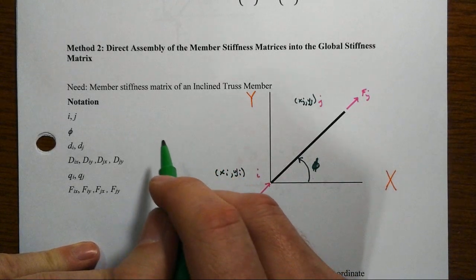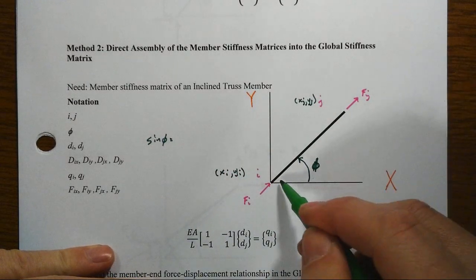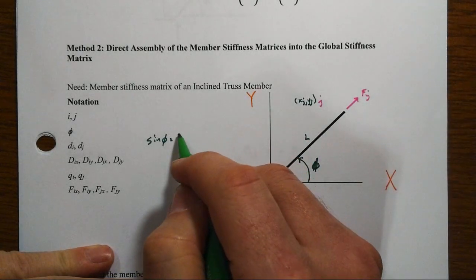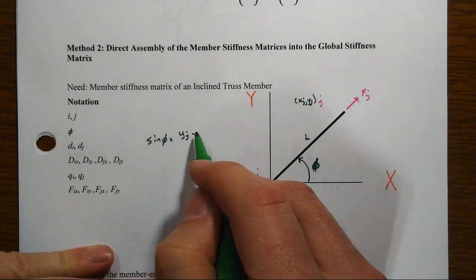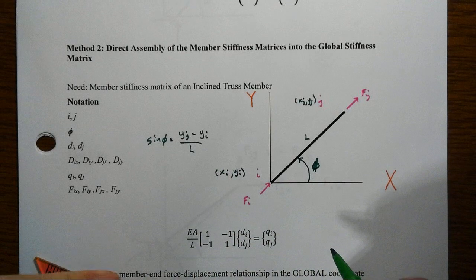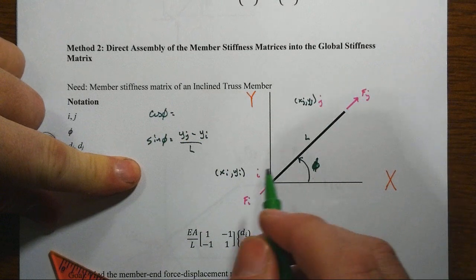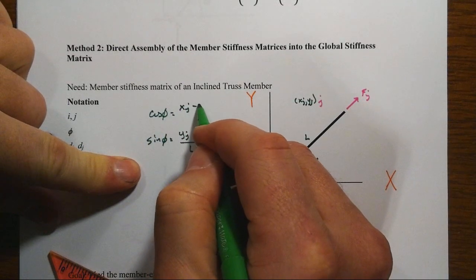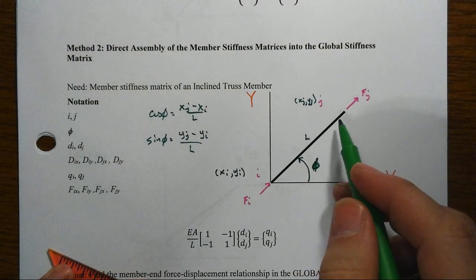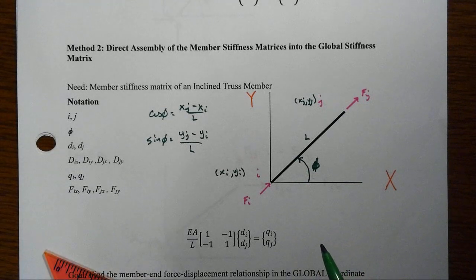The sine of phi is going to be equal to the rise over run. And so if this is our member length L, the rise would be given to us by YJ, the vertical at the far end, minus YI, the vertical distance or coordinate over here, divided by L. And likewise, cosine of phi would be adjacent, the difference here over the L. So XJ at the end minus XI at the beginning divided by L. And of course, L is going to be the sum of the squares of the differences between those two.